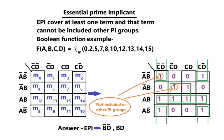A Karnaugh map is given for these minterms. Here we found two EPI terms: complement of b and complement of d (b'd'), and bd. These two groups each include at least one term not included in any other PI group.